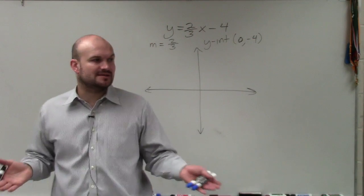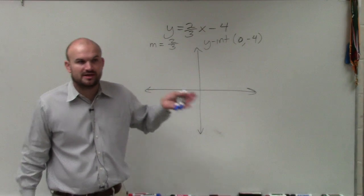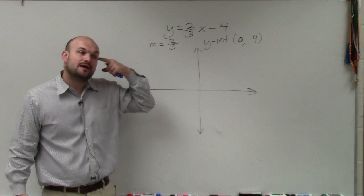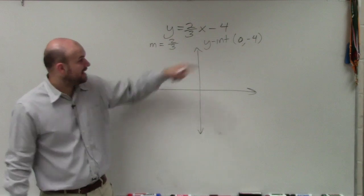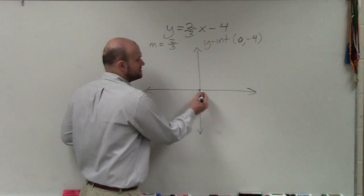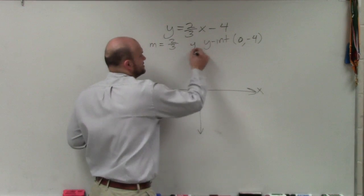So the y-intercept b equals negative 4. But I like to write the y-intercept as a coordinate point. Because what that reminds me is the y-intercept, that point, I can plot. So here is 0, 0. Here's the x-axis. Here's the y-axis.